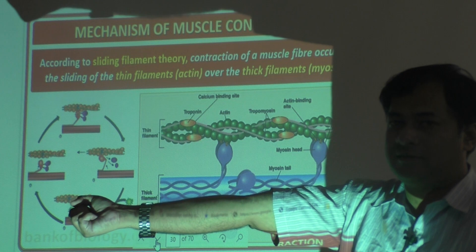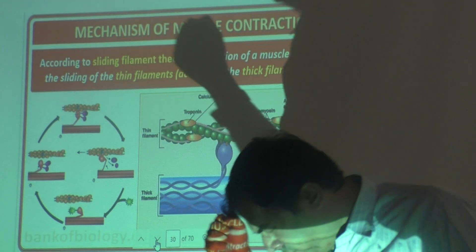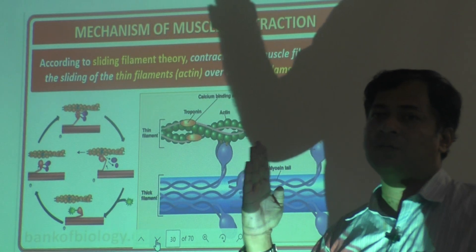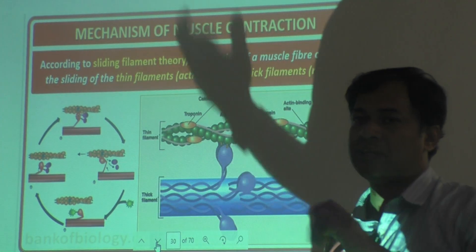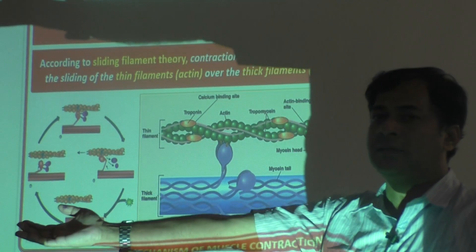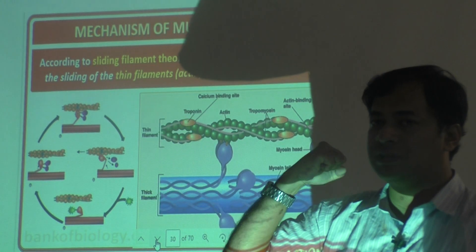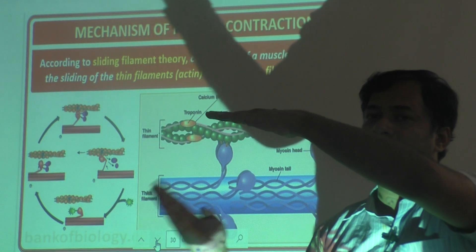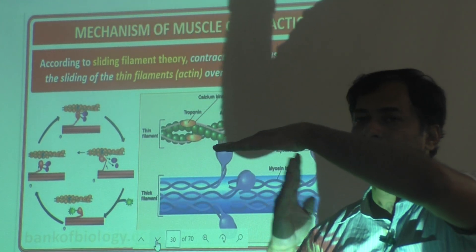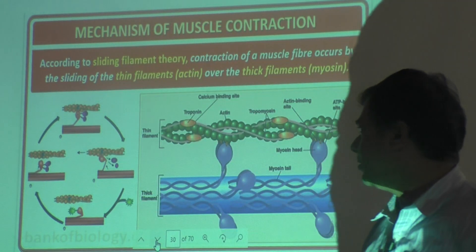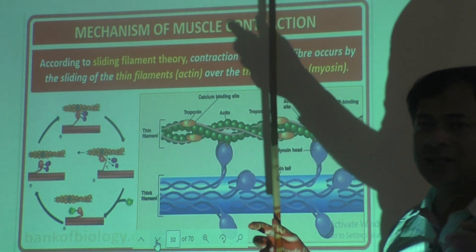When I contract my hand, the myosin head goes and binds to troponin of actin, and ATP also binds because energy is required. Then when contraction is over and I am relaxing, the myosin head gets disconnected — it is actually moving and sliding. That is called sliding filament theory. It will slide, and ATP will be released because the work of ATP is over and energy has already been used.